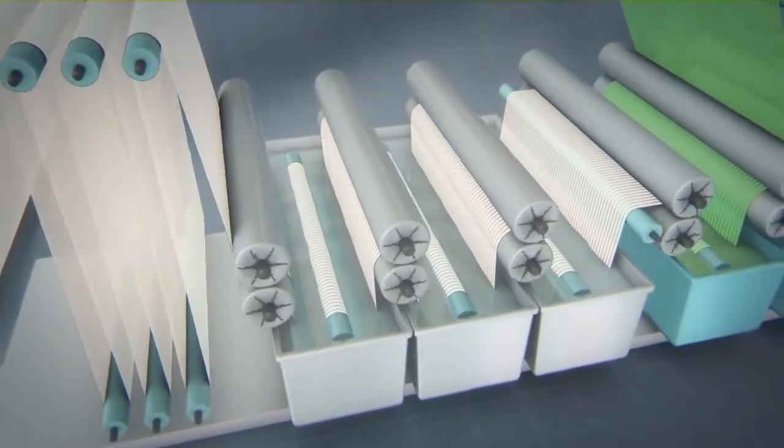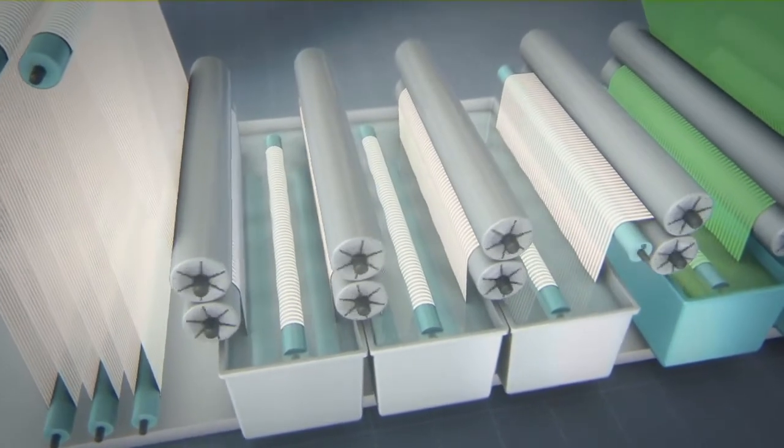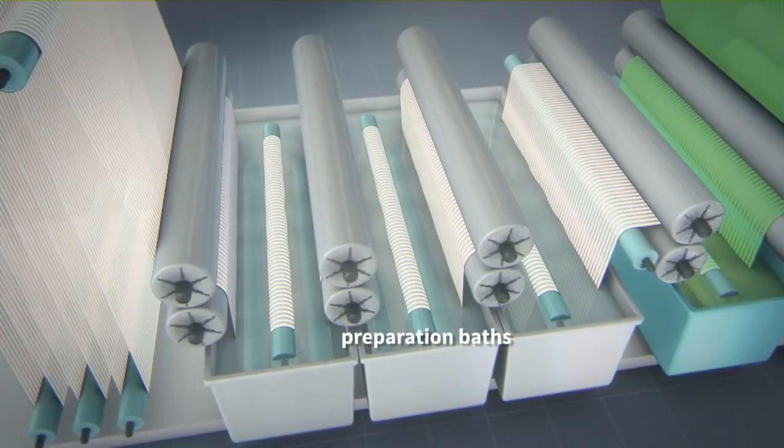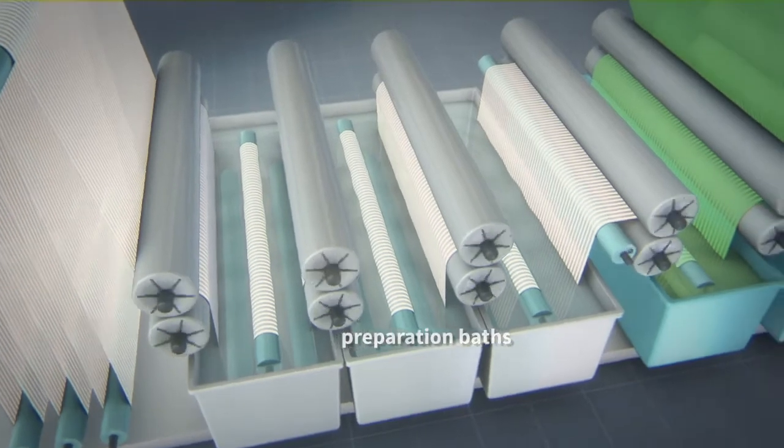After spinning, up to 4,500 cotton threads are simultaneously pre-wetted, degreased with chemicals and cleaned in several preparation baths.